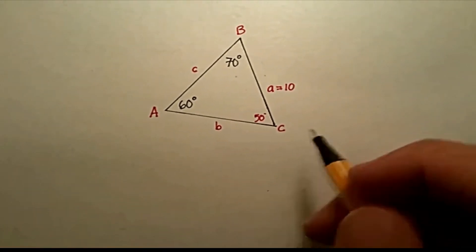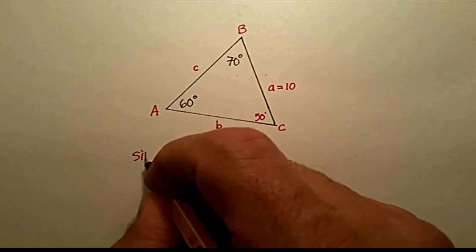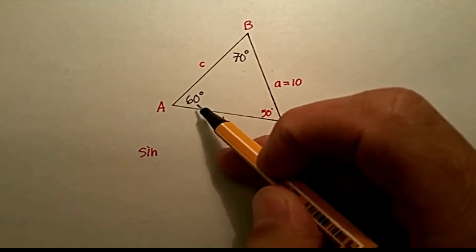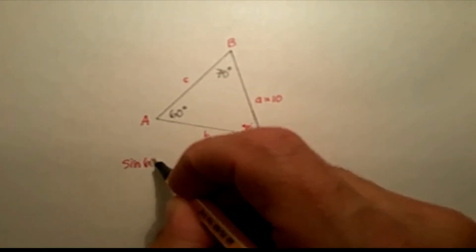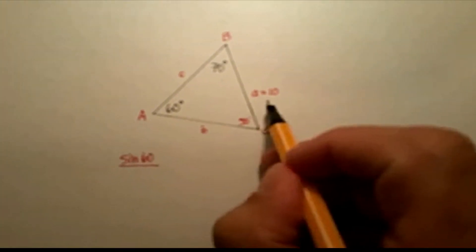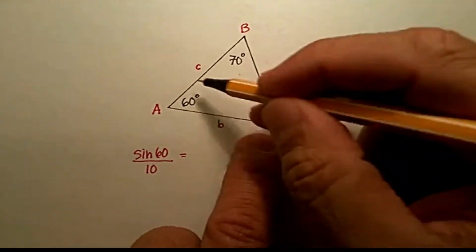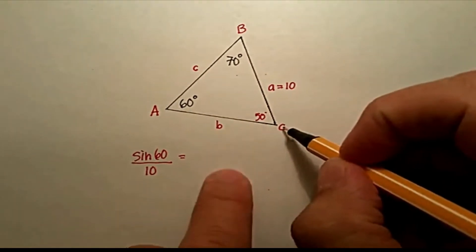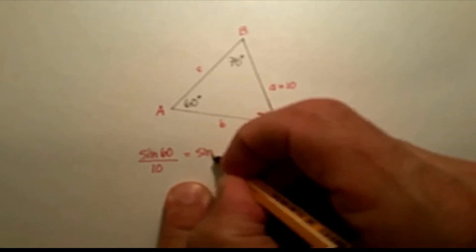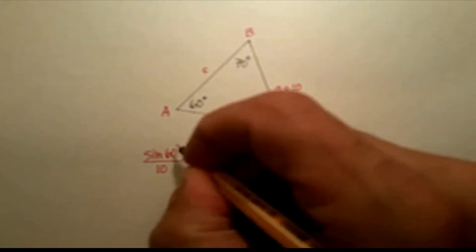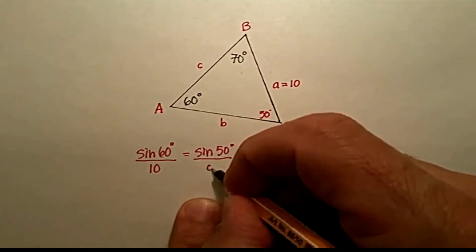Now, let's say I want to find side C and side B. Remember, I just said that I could take the sine of, let's just take angle A, all right? So, sine of 60, the opposite of A would be 10, and that should be proportionate to, if I'm trying to find C, for example, sine C, or let's say it's sine of 50, put the degrees in there, over C.